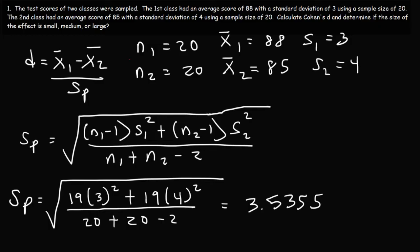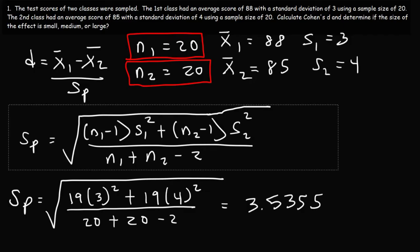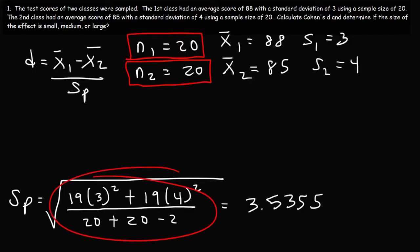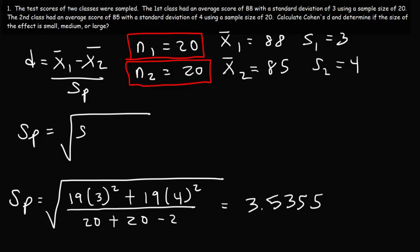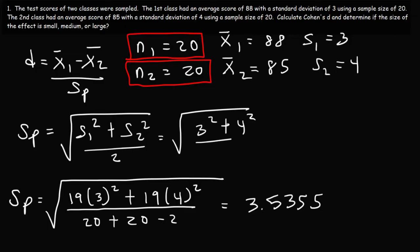Notice that the sample sizes for the two classes are the same. When that's the case, there's a much simpler equation you can use to calculate the pooled standard deviation. Here's that formula: it's the square root of (S1 squared plus S2 squared) divided by 2. So it's the square root of (3 squared plus 4 squared) divided by 2. 3 squared is 9, 4 squared is 16, 9 plus 16 is 25, half of 25 is 12.5, and the square root of 12.5 gives us 3.5355 — the same answer.